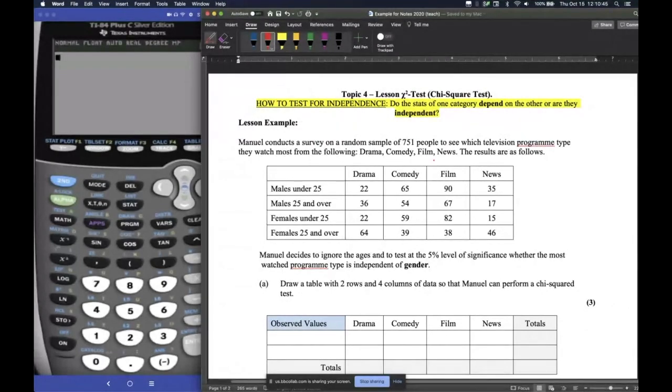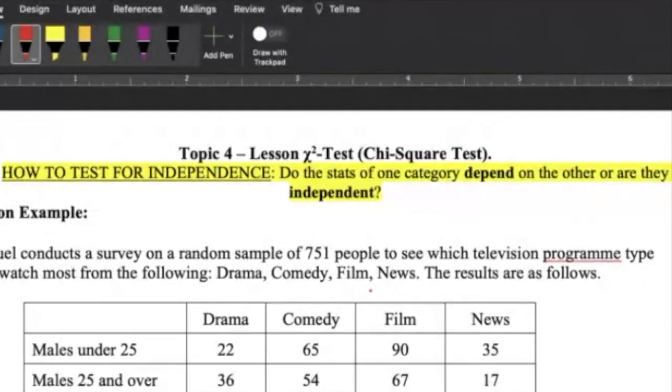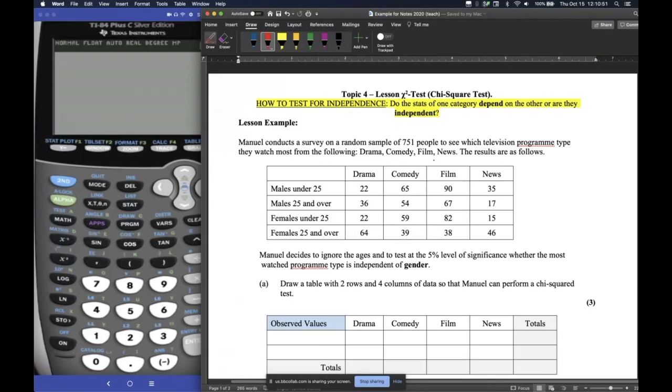All right, so chi-square test. We're testing for independence. Do the stats of one category depend on the other, or are they independent? Do they not rely on each other? We're going to go through this example together.